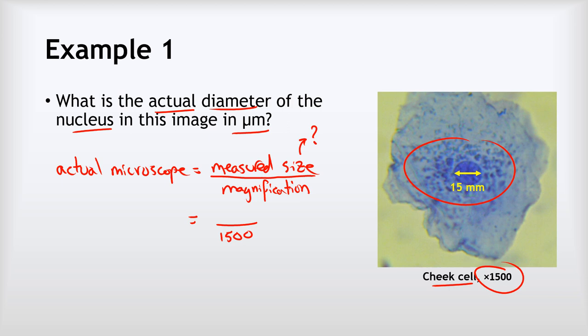Now the magnification is given to us and it would be given to you in the exam as well. So that's easy, we just divide something by 1500. But what is this measured size? Well the measured size is the actual diameter of that nucleus on that image that you can see, and the only way to find that is to break your ruler out and to measure it. And if we do that we find that the measured diameter of that nucleus is 15 millimeters. So divided by 1500 gives me 0.01 millimeters as my actual size. However, the question is asking you to give it in micrometers. So we need to remember that there are 1000 micrometers in one millimeter and therefore we need to times that value by 1000 to give me 10 micrometers as my final answer.